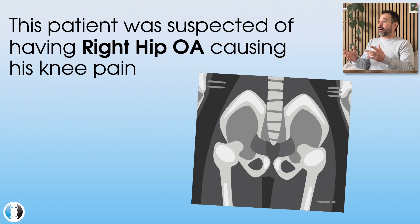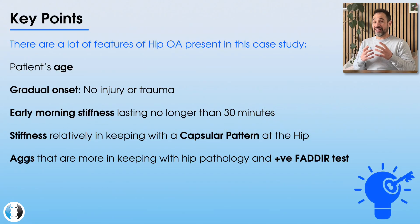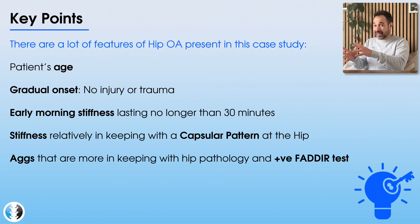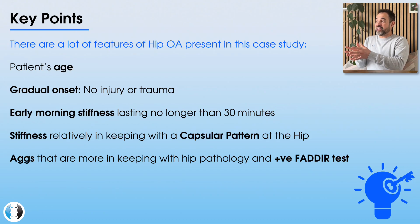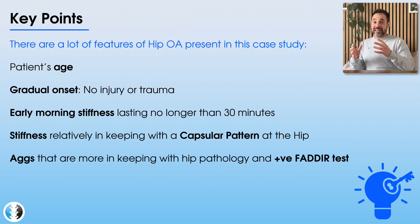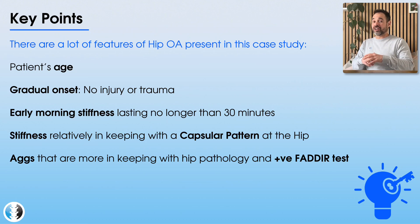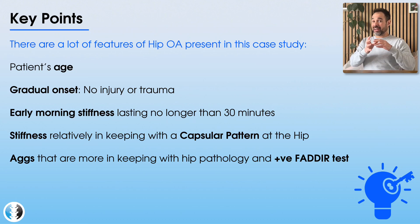Looking at the key points that led to this diagnosis: there were many features suggesting hip pathology over knee pathology. The hip was much more painful on movement testing, while the knee had no major signs of irritation or pain on palpation. The patient's age supports the demographic for hip osteoarthritis; the gradual onset with no injury also supports it. Early morning stiffness lasting no longer than 30 minutes is more in keeping with osteoarthritis than rheumatoid arthritis, which tends to have morning stiffness lasting longer than 45 minutes.